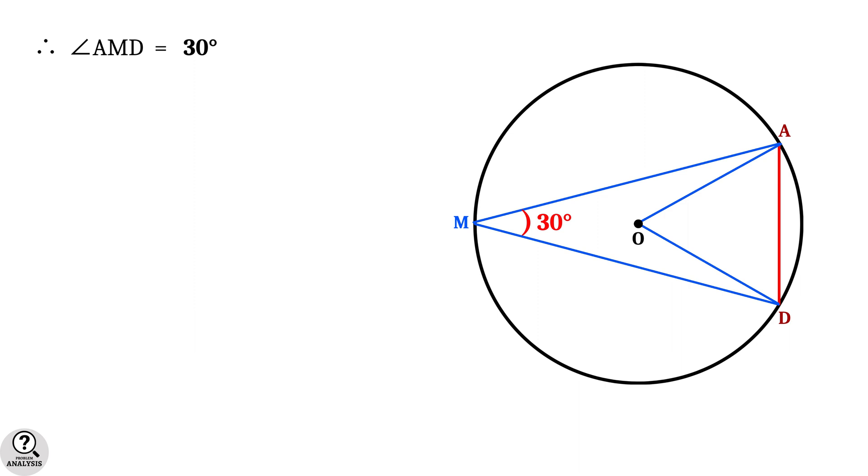Now draw the radii OA and OD. And then observe the angles, angle AMD and angle AOD. As you can see, angle AMD is the angle on the major arc AD, and angle AOD is the angle on the center.